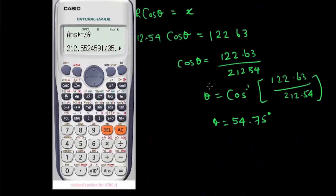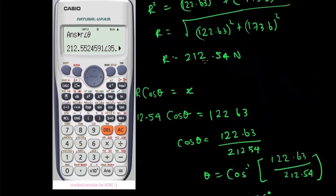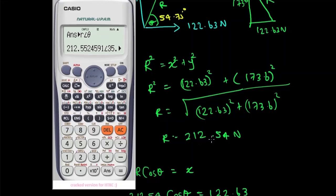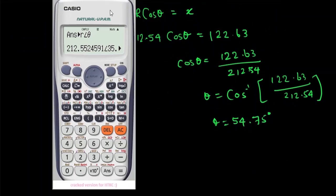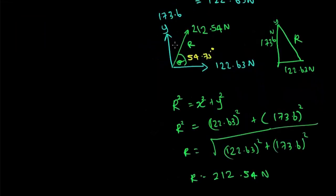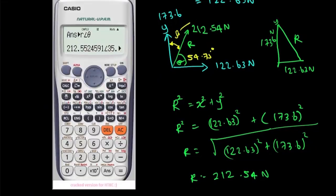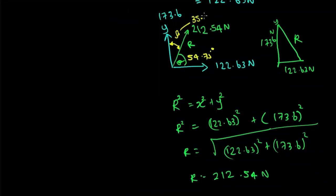You have seen that your resultant force is 212.54, and it gives us that. But if you look at the angle, you can see some sort of difference here. Because this angle is given from the imaginary line, that means it shows us the angle of this phase here. Let's say beta. It shows us 35.23.